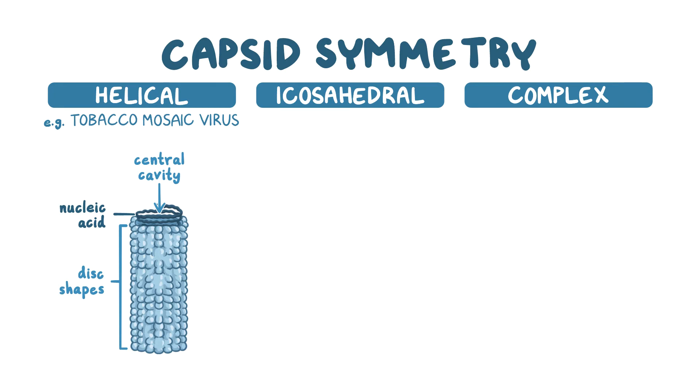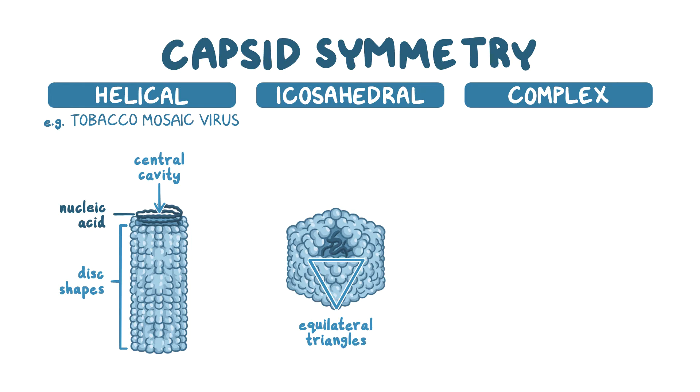Moving on to the icosahedral viruses, which are made up of equilateral triangles fused together in a spherical shape that fully encloses the genetic material. These viruses are released into the environment when the cell dies, breaks down, and lyses, thus releasing the virions. Some examples of icosahedral viruses include poliovirus, rhinovirus, and adenovirus.